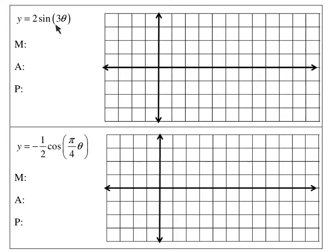We are going to graph y equals 2 sine theta. The first thing I want to do is find my midline, amplitude, and period. My midline, since I added nothing, is simply going to be 0. My amplitude is the number in front, so my amplitude is 2. And my period is 2 pi divided by 3. So those are my midline, amplitude, and period in order to graph this function.